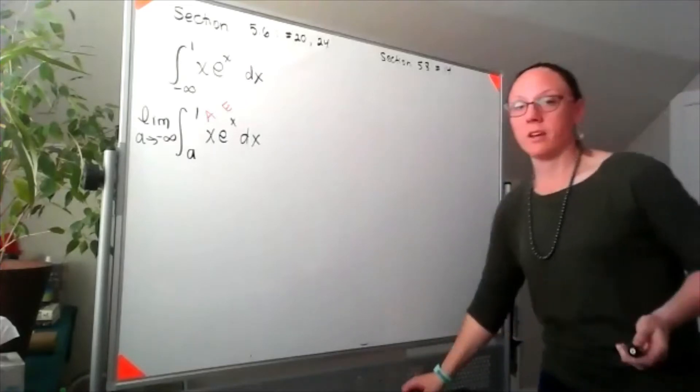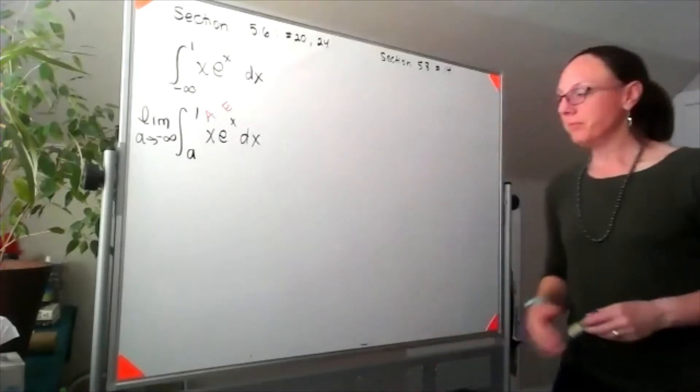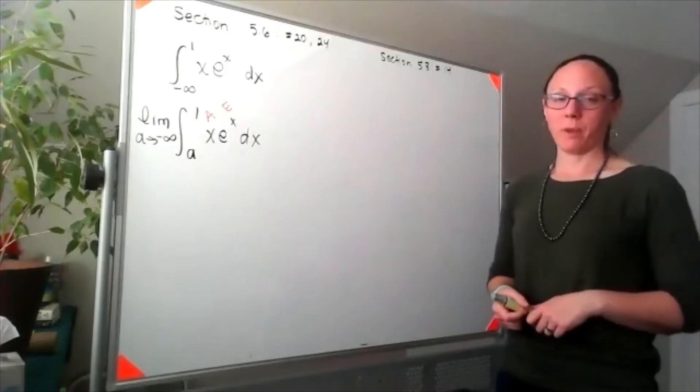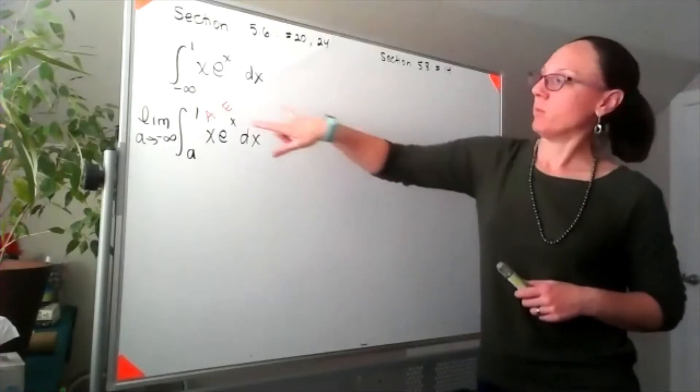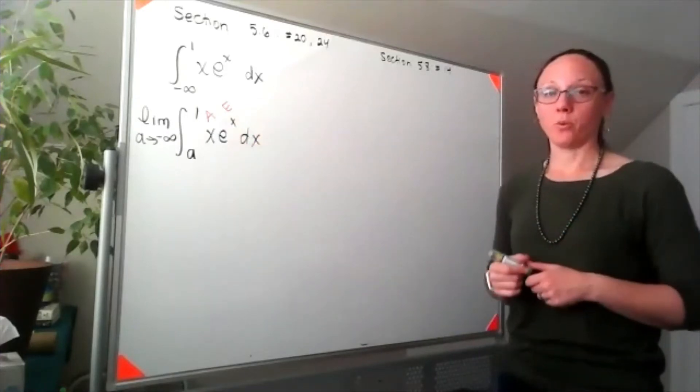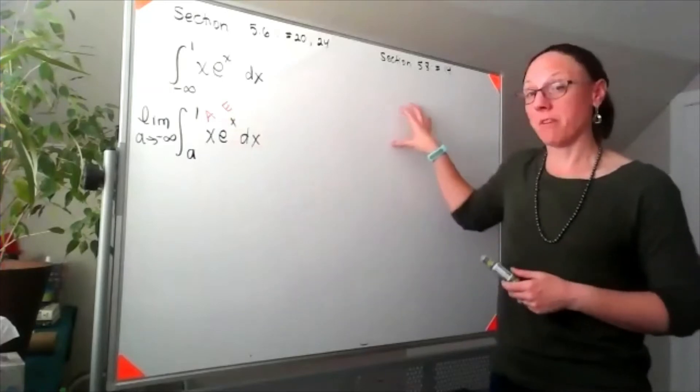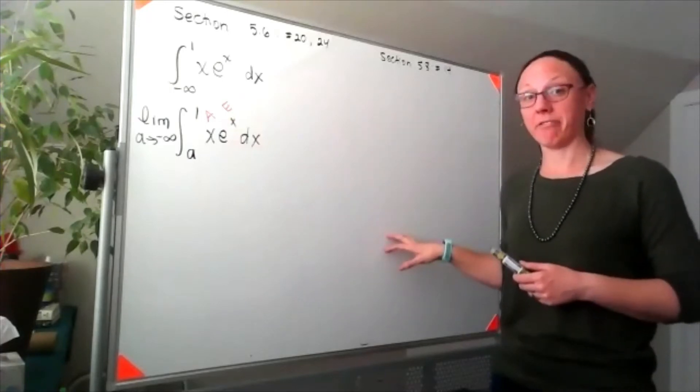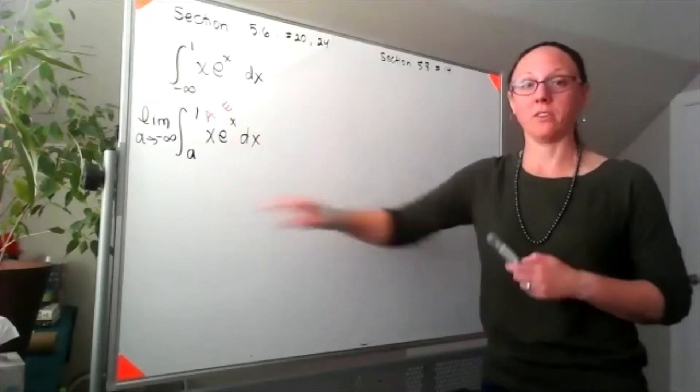It's not going to be a u substitution, so I'm going to have to integrate this by parts. I'm going to come off to the side and evaluate the indefinite integral and then we'll put that back into our limits.